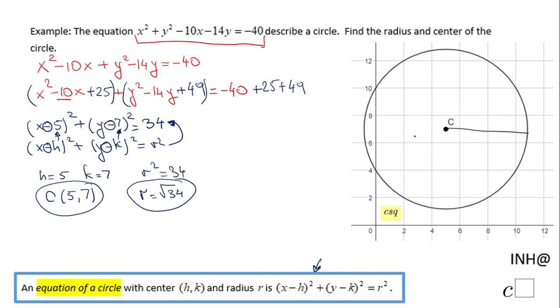And the radius is any segment that goes from the center to the circumference, and that will be square root of 34. If you enjoyed this tutorial, don't forget to click the like button and come back to C Squared for more help. Thank you.